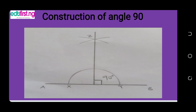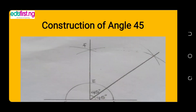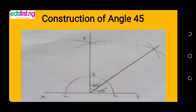Easy, isn't it? Now since angle 90 is straightforward, we move to the next angle: angle 45 degrees. You can either bisect the angle 90 you have already drawn or start from scratch. Bisecting an angle means cutting it into two equal parts, so when you cut 90 into two parts, you have 45 and 45.